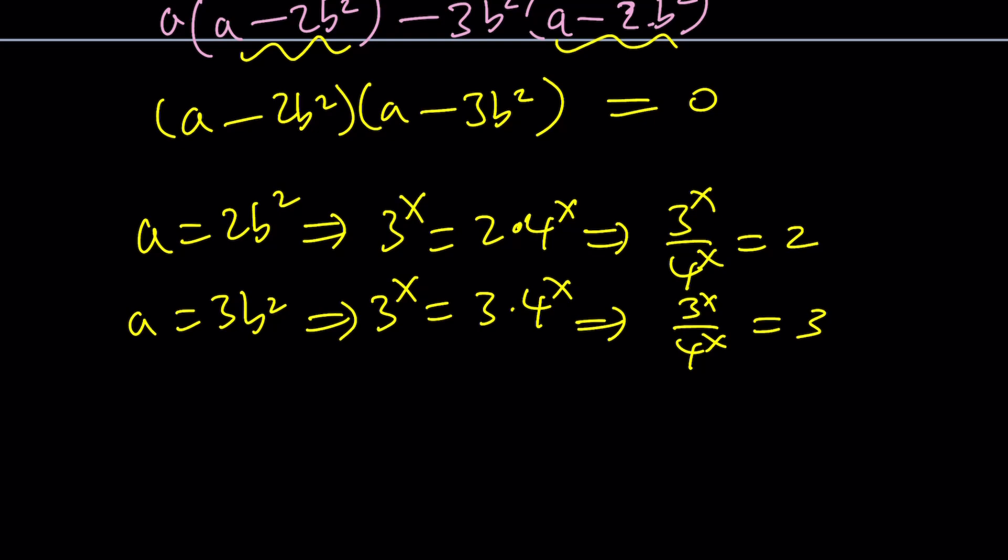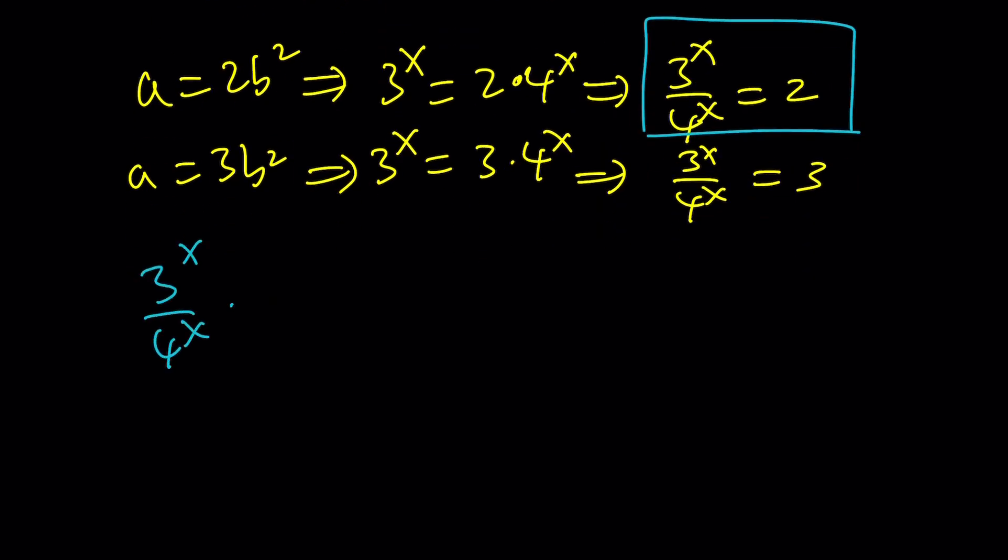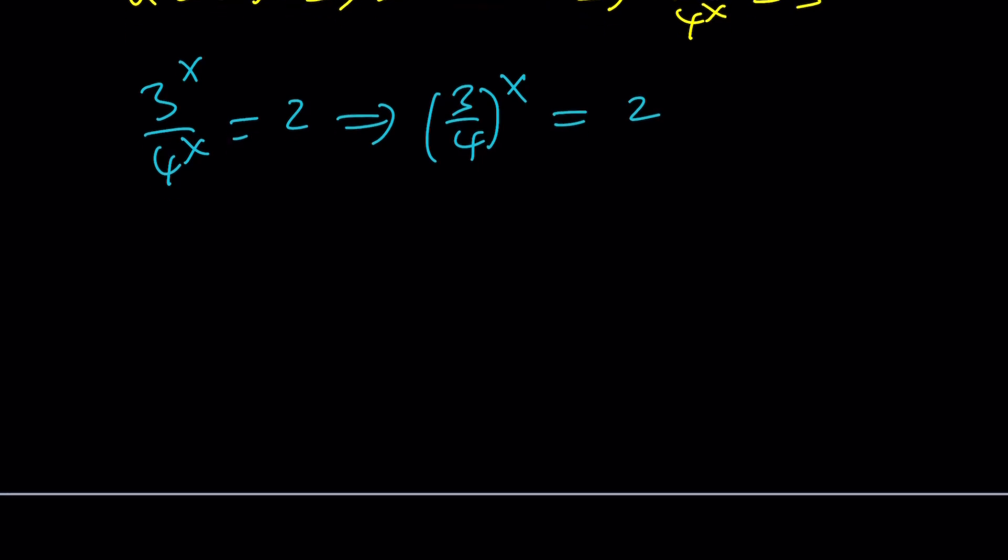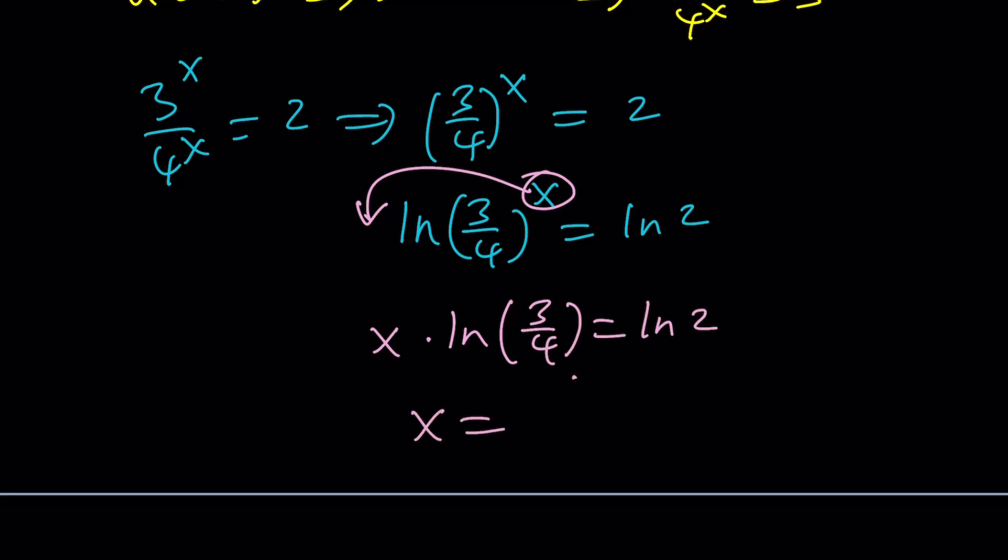Let's take the first one. 3 to the x over 4 to the x equals 2 implies 3 over 4 to the power x. So we can use a common exponent. Natural log both sides. ln both sides. And then you're going to get the x to the front. x times ln 3 fourths is ln 2.